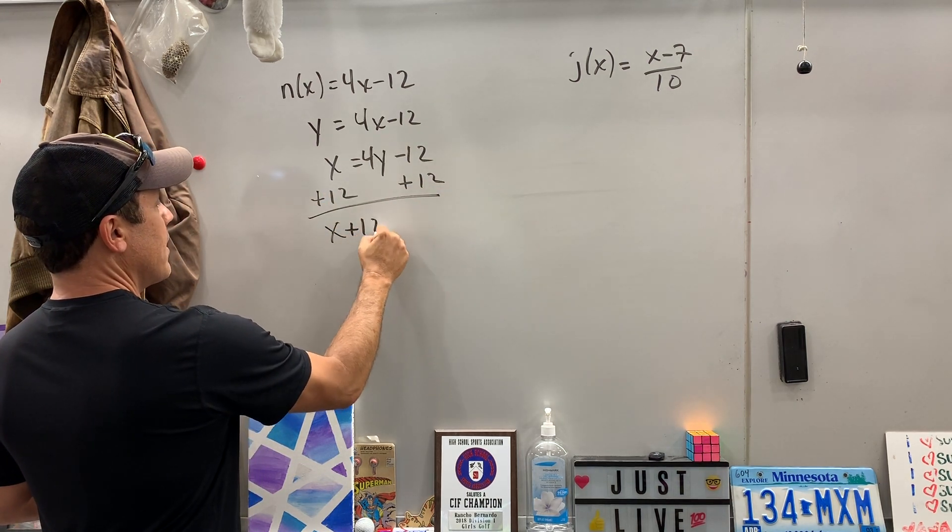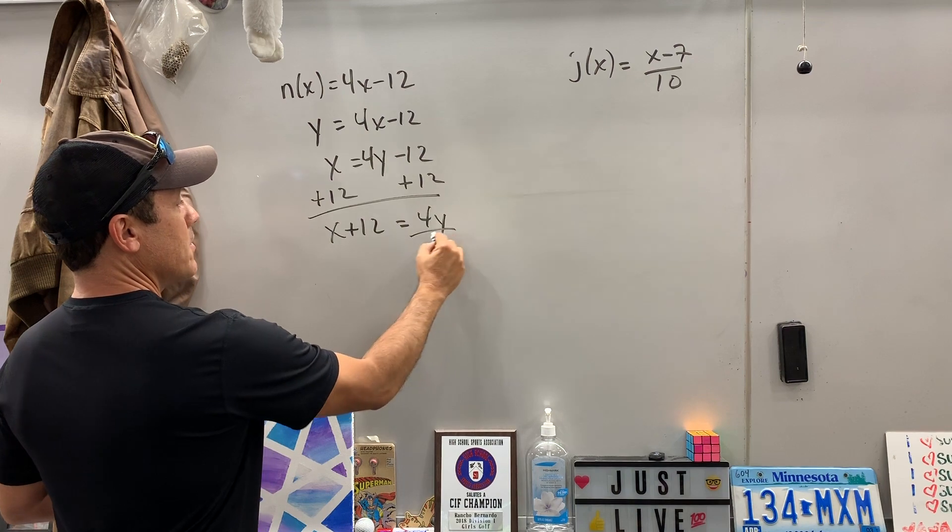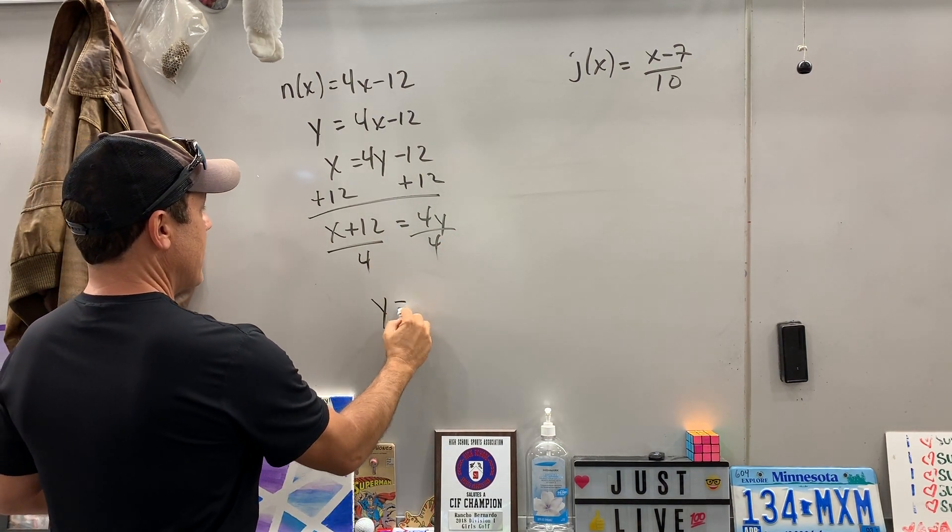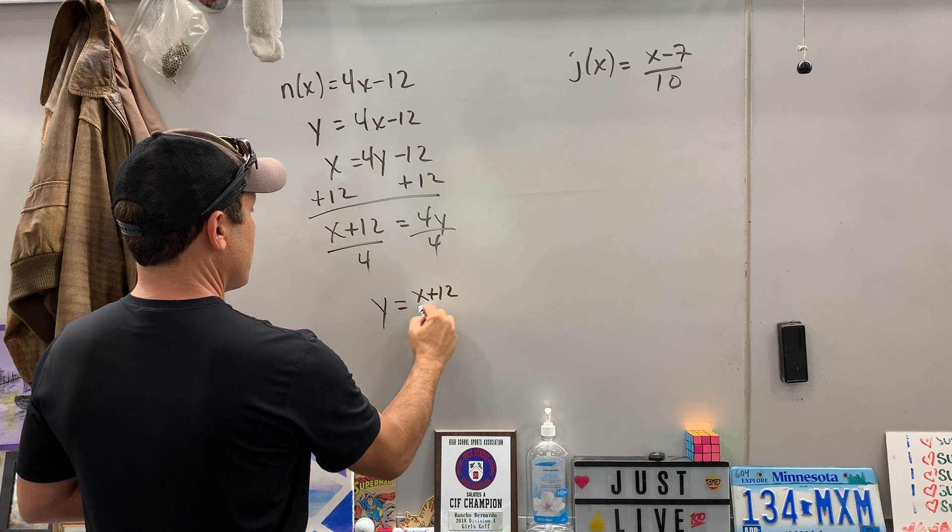So you get x plus 12 equals 4y. To polish it off, divide both sides by 4. And then sure enough, y is equal to x plus 12 over 4.